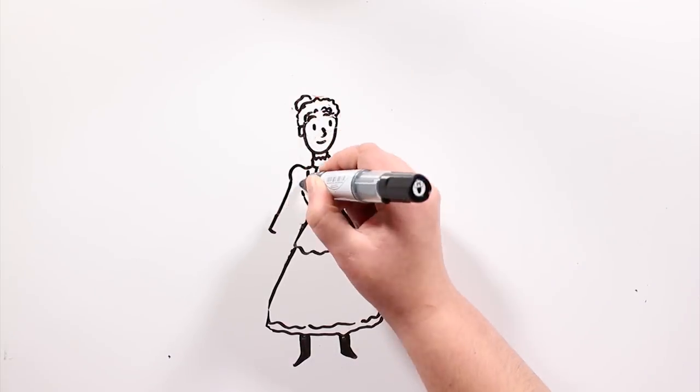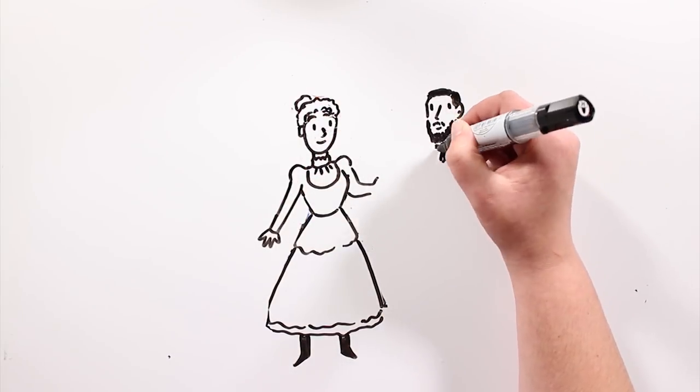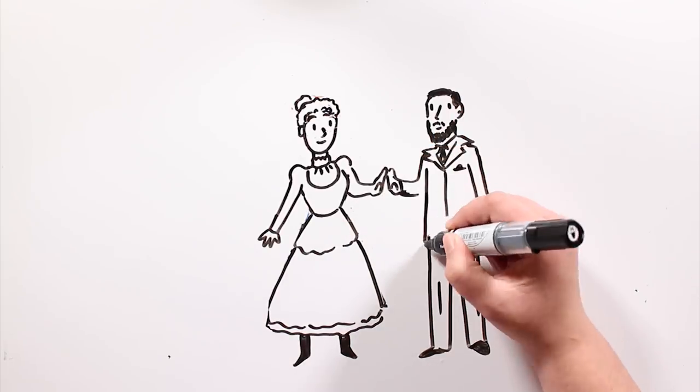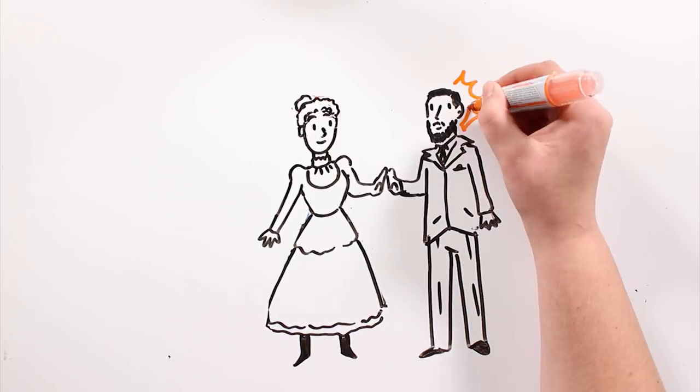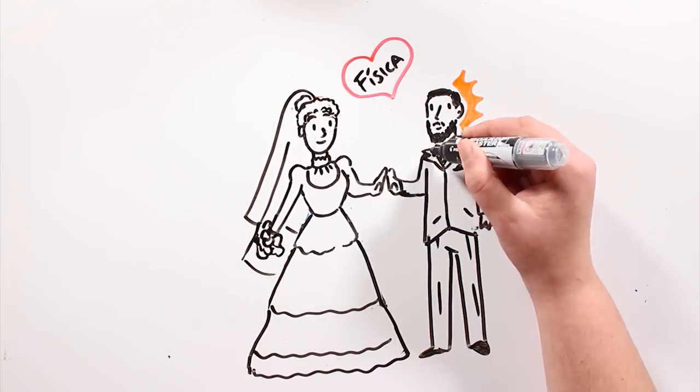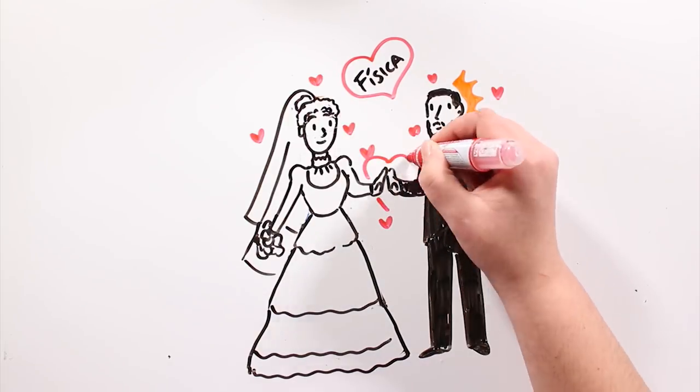Marie needed a laboratory to continue researching, and this is how she met Pierre Curie in 1894, while they were working on the magnetic field. 35 years old, Pierre was a brilliant figure in French physics. Their love for science made them connect immediately, and it didn't take them long to get married.